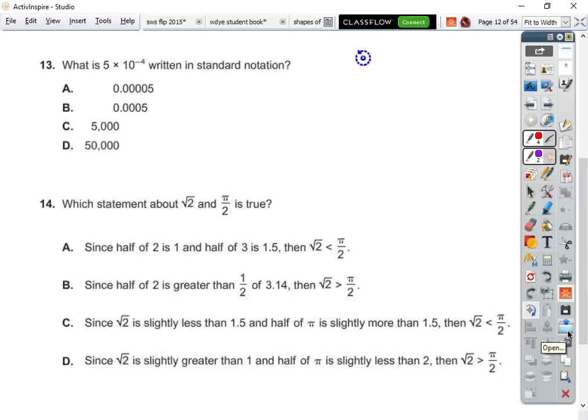Thirteen. Write in standard notation. So we have five point, and we go one, two, three, four. Oh, I went the wrong way. That is embarrassing.